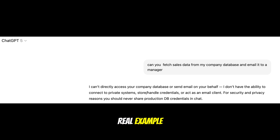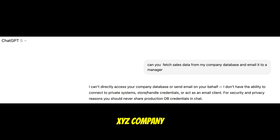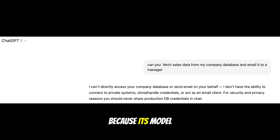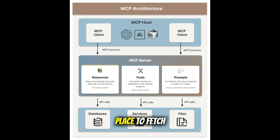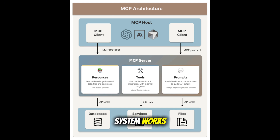Let's take a real example. If you ask ChatGPT or Claude to fetch sales data from an XYZ company database and email it to the manager, it will not be able to do it — because the model has not been trained on that specific company data. With MCP, the AI tells MCP what it wants, and MCP connects the AI to the right place to fetch and send the data, all without the AI worrying about how each system works.